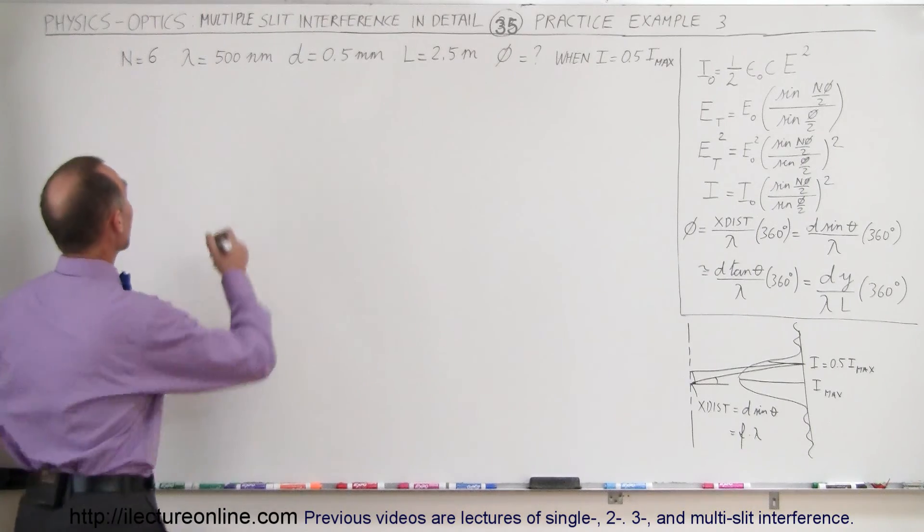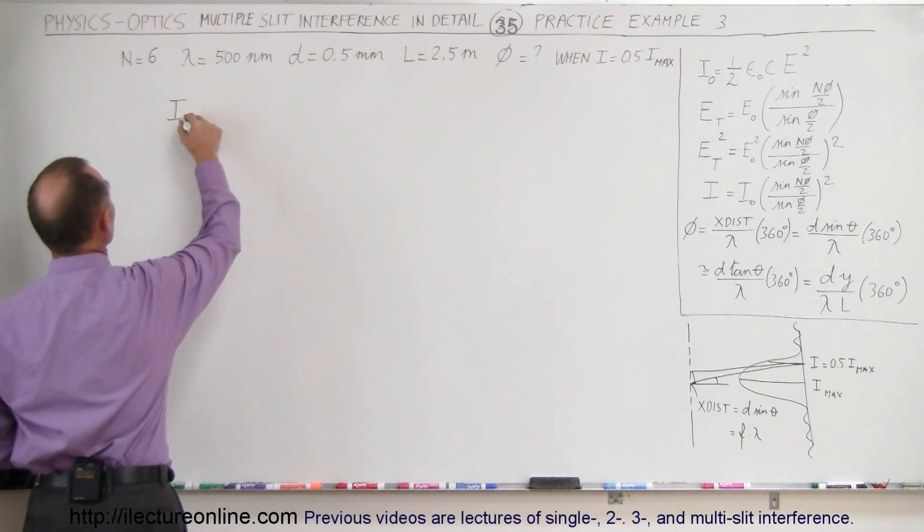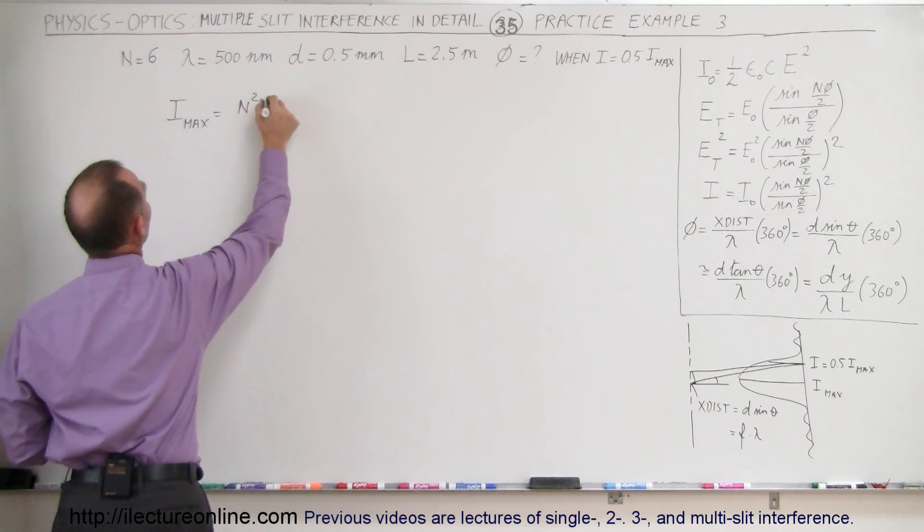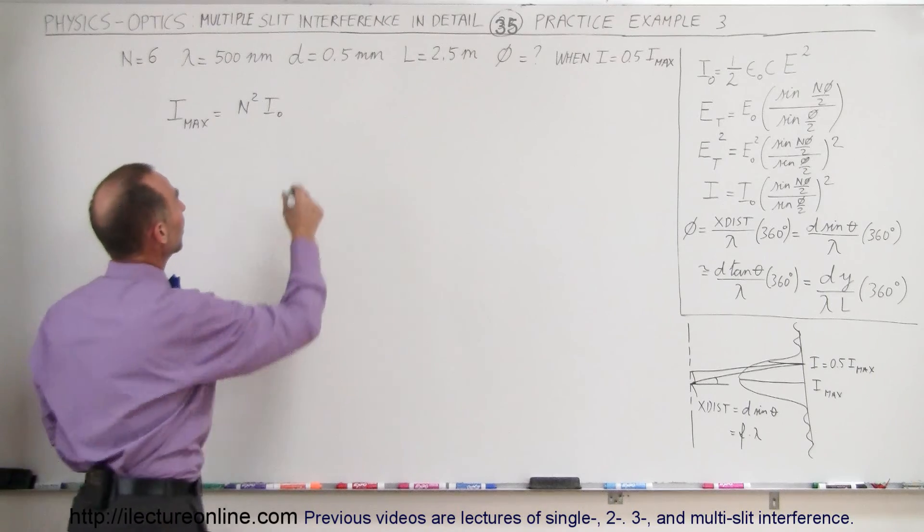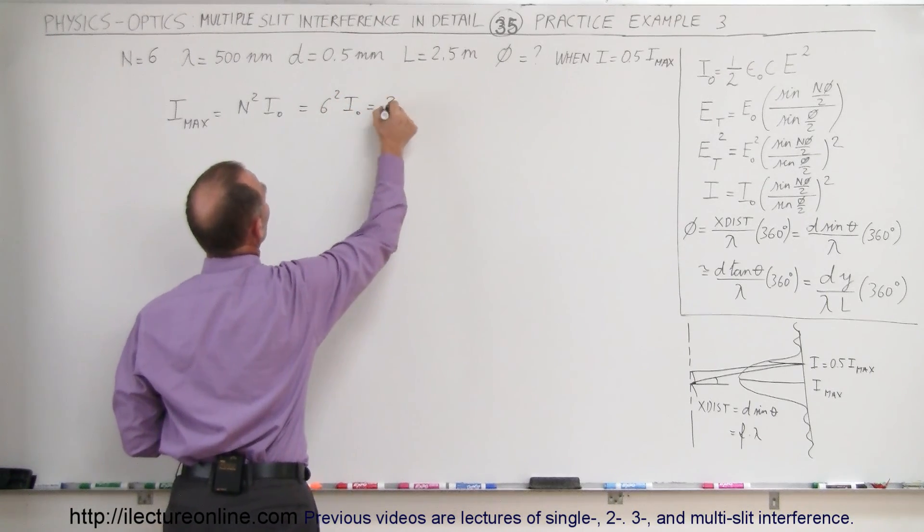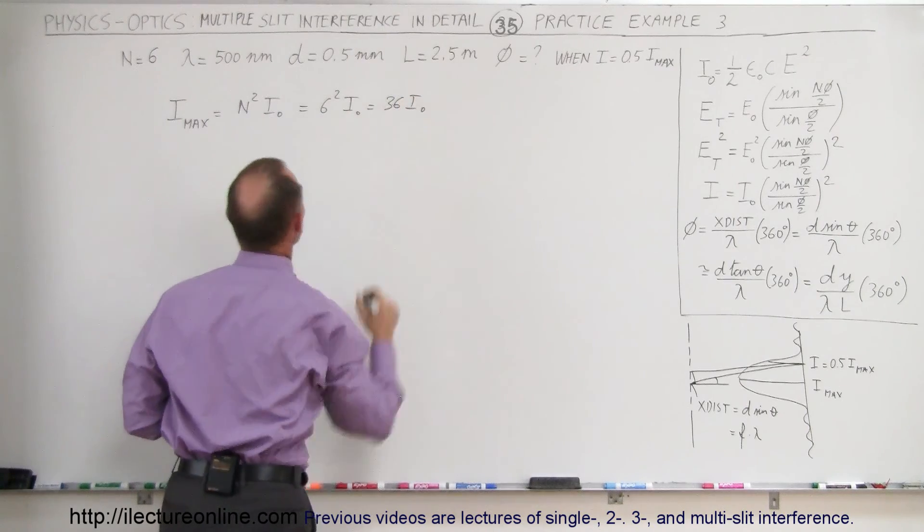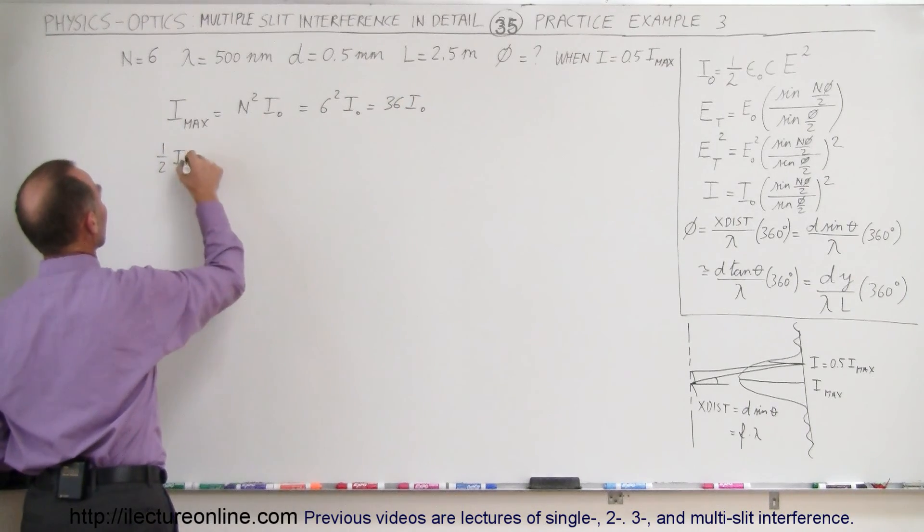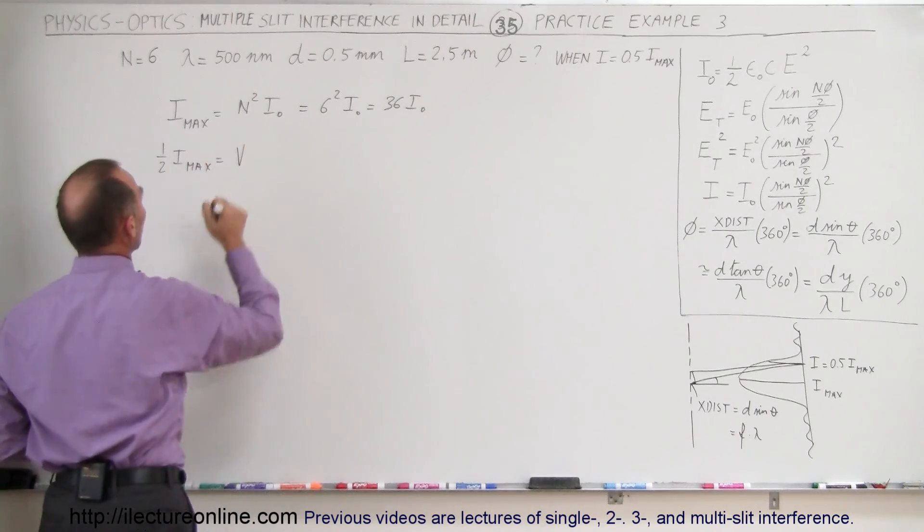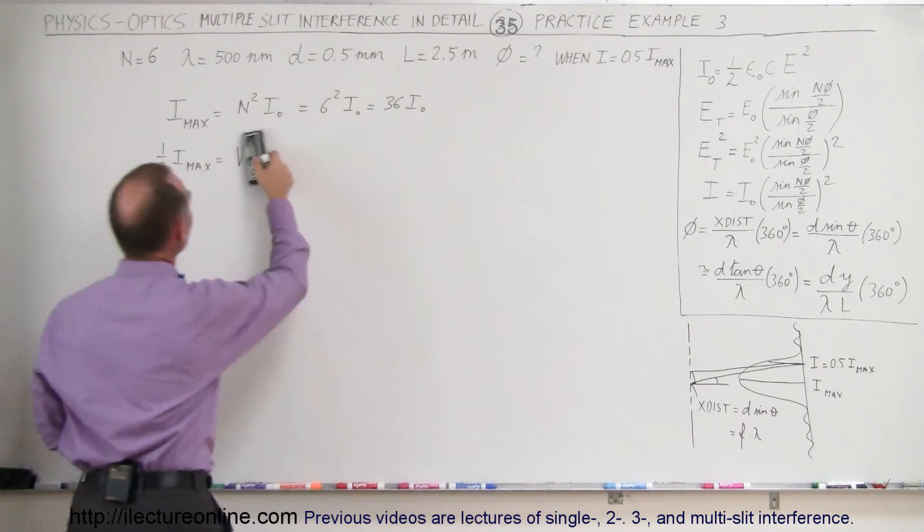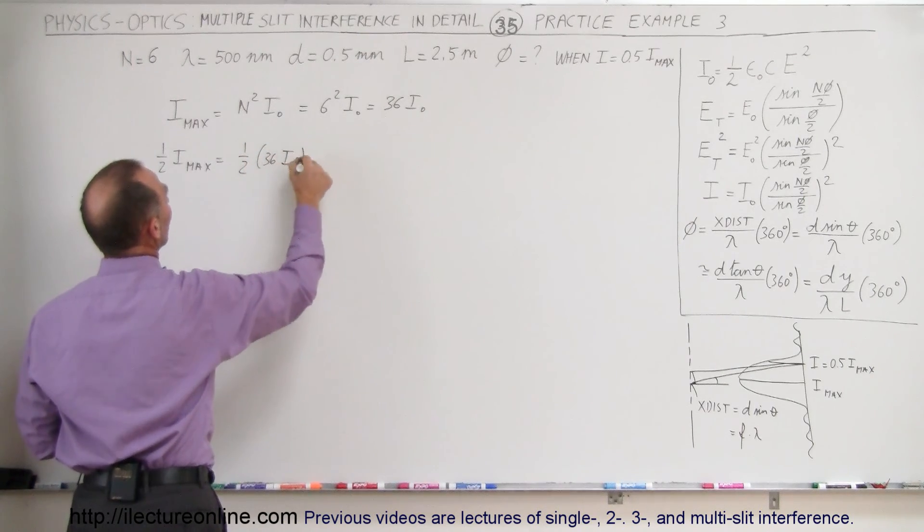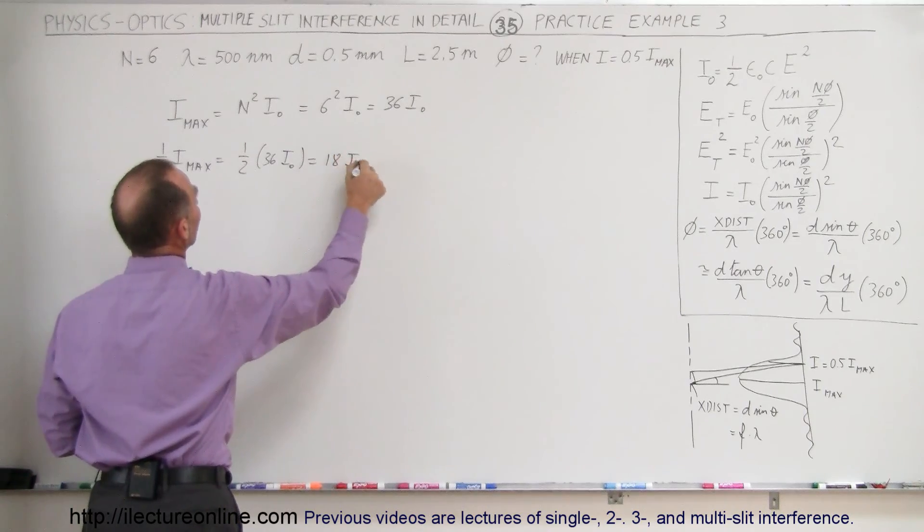For a six-slit system, I max is going to be n squared times I of a single slit, and so in this case that would be equal to 6 squared times I initial, which is equal to 36 I initial. That means half of I max is equal to one-half 36 I sub-naught, which is equal to 18 I sub-naught.